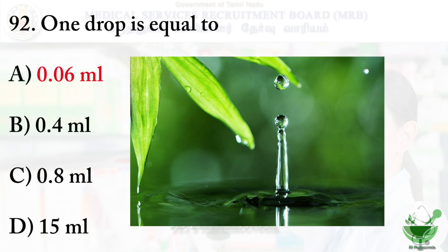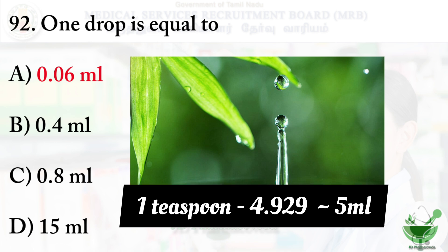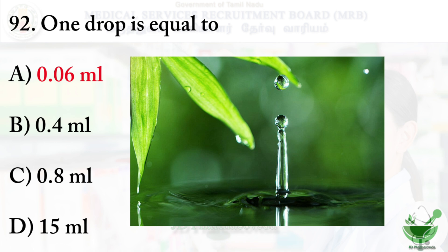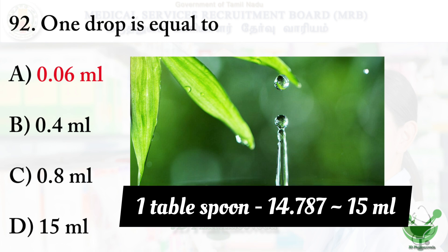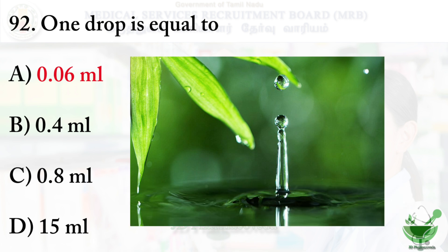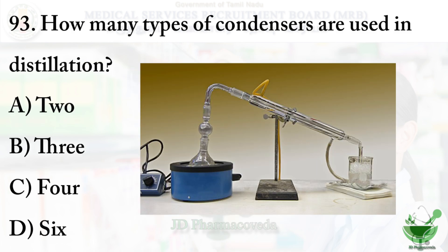The right option is option A: 0.06 ml. From this, it can also be asked: one teaspoon is how many ml? One teaspoon is accurately 4.929 ml, so its round figure is 5 ml. One tablespoon is 14.787 ml accurately, and the round figure is 15 ml.